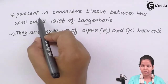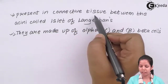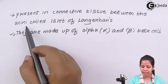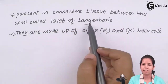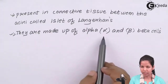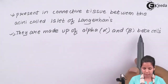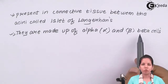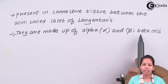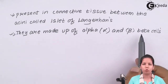These cells are basically present in the connective tissue between the acini cells and the islets of Langerhans. They are made up of alpha cells and beta cells, and these two cells are basically responsible for glycogen metabolism, or dealing with glucose or glycogen.